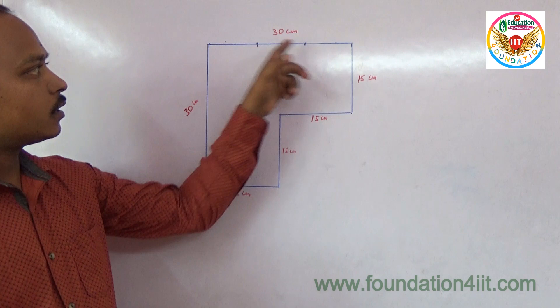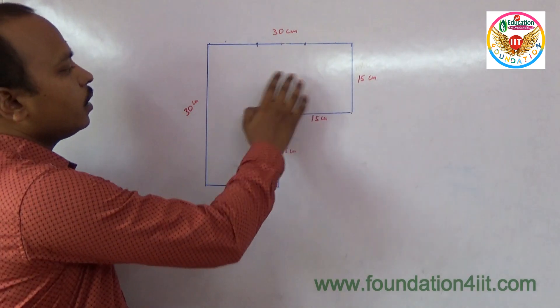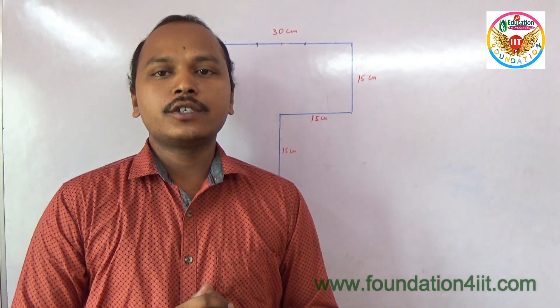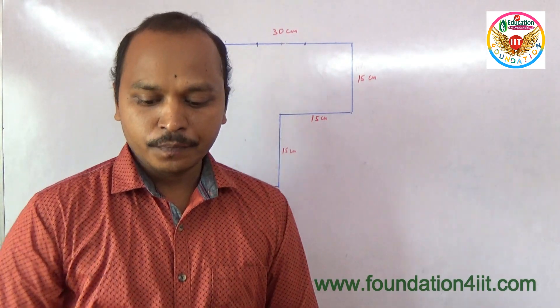This is 30 and this is 30, 15, 15, and 15. So making three identical shapes is very simple, but making four identical shapes has a unique solution—only one solution that I'll show you.